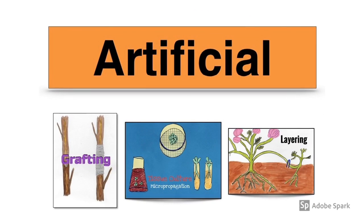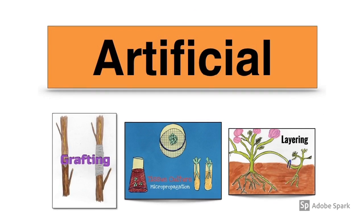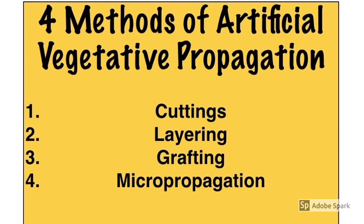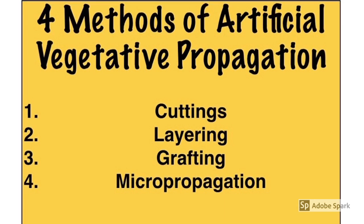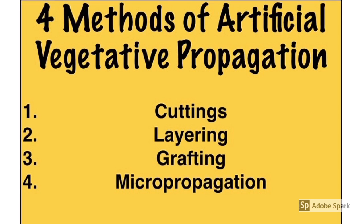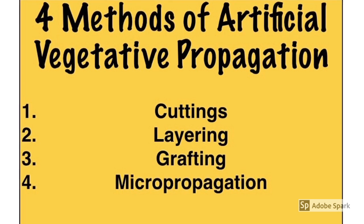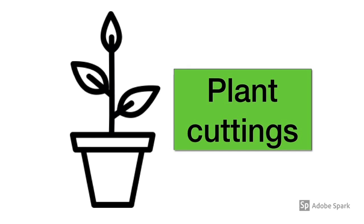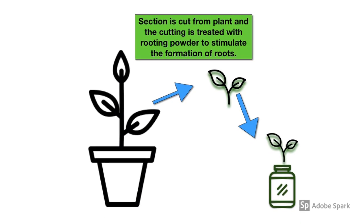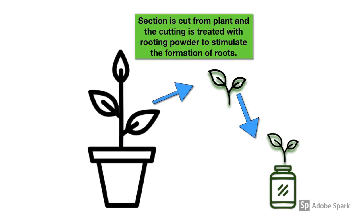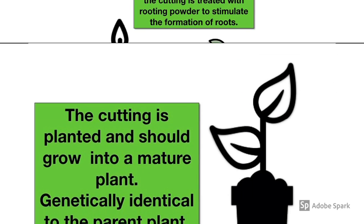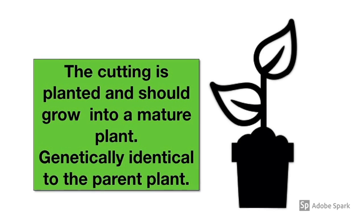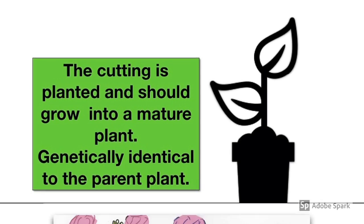Now on to artificial methods of vegetative propagation. The four methods you must know are cuttings, layering, grafting, and micropropagation. For plant cuttings, a cutting is taken off an established plant, the end is dipped in rooting powder, and the cutting is then planted. This will grow into a new mature plant genetically identical to the parent.